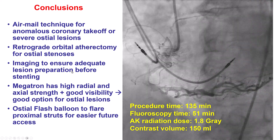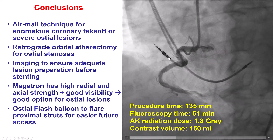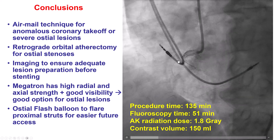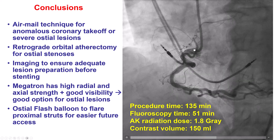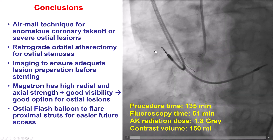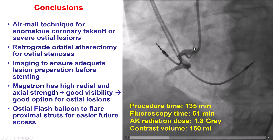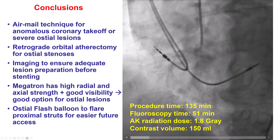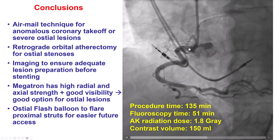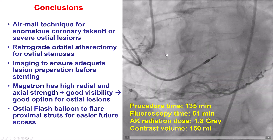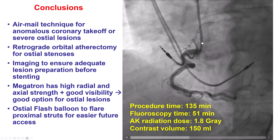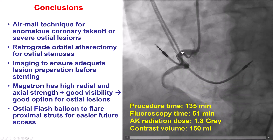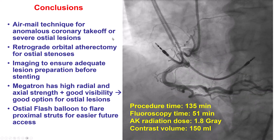Imaging is critical for heavily calcified lesions such as this one. We used the Megatron stent, which has excellent radial strength and visibility to treat the ostial lesion. We confirmed ostial coverage using intravascular ultrasound, and we used the ostial flare balloon to flare the stent struts and facilitate re-engagement of the right coronary artery if this will be required in the future. Thank you.